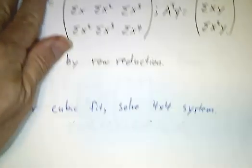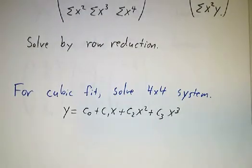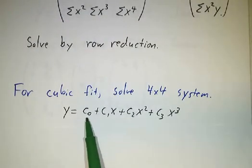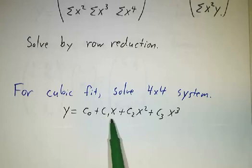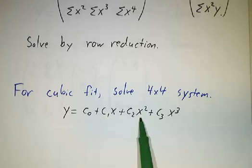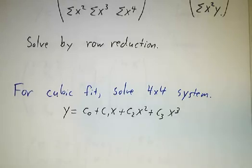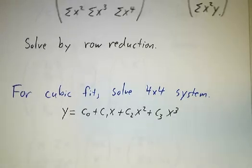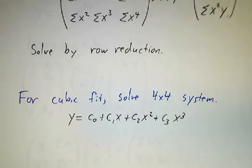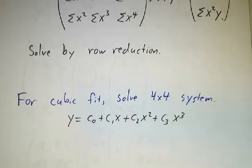If we wanted to fit something as a cubic, then matrix A would have a column of ones, a column of x's, a column of x squareds, and a column of x cubes, and so on. Of course, the more terms you give yourself, the better a fit you're likely to get.